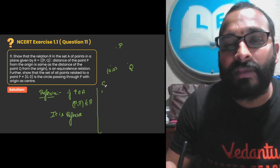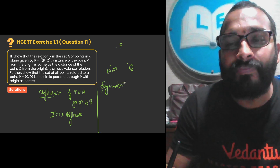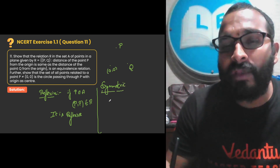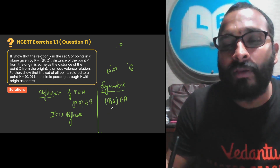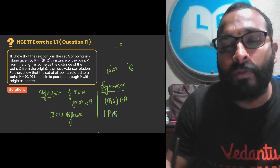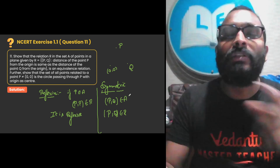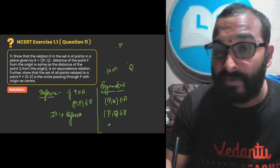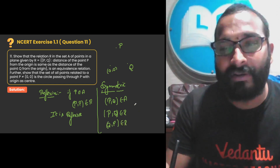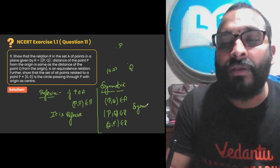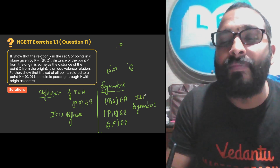Now let us check whether the given relation is symmetric. Take two points P and Q which belong to the given set A. If (P, Q) belongs to R and obeys the relation, because the distance of point P from the origin and the distance of point Q from the origin is the same, then (Q, P) is also the same. When we are talking about distance, that relation will be symmetric. So it is symmetric.